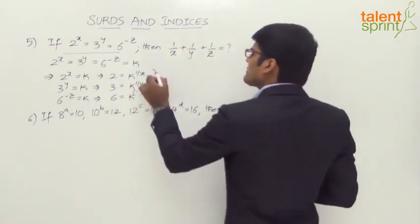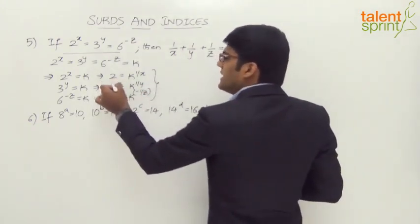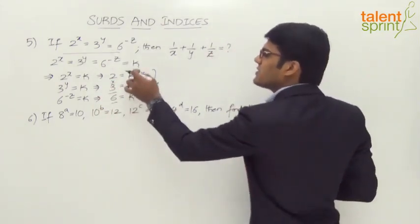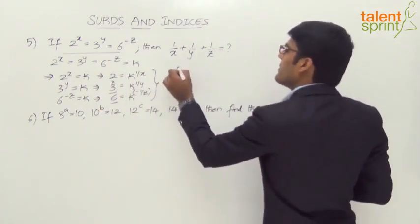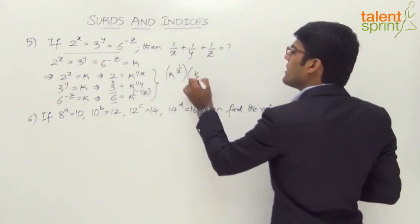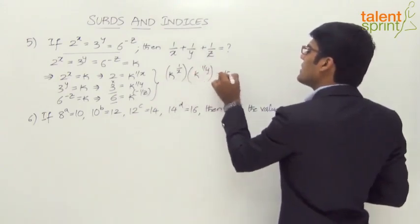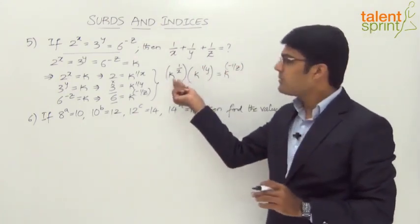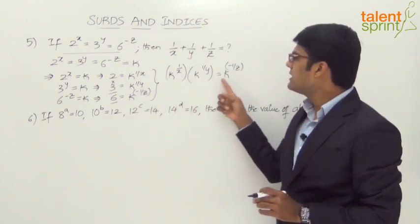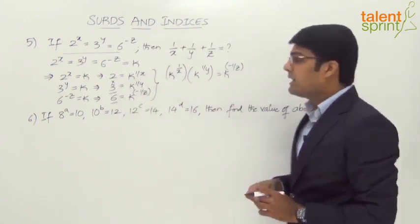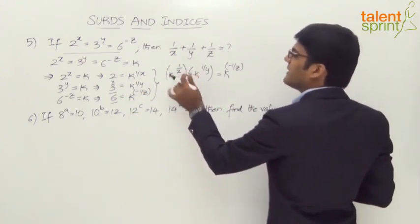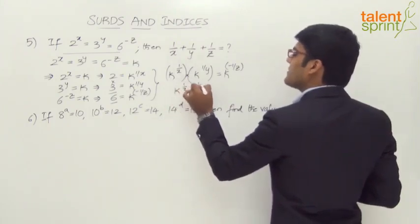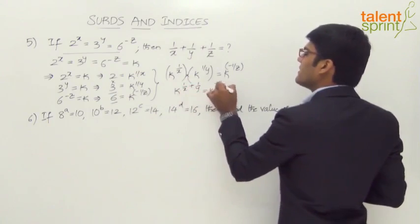Now, 2 × 3 = 6, so we multiply the first two equations to get the third. We get k^(1/x) × k^(1/y) = k^(-1/z). Applying the laws of indices — when bases are equal and terms are multiplied, the powers are added — so k^(1/x + 1/y) = k^(-1/z).